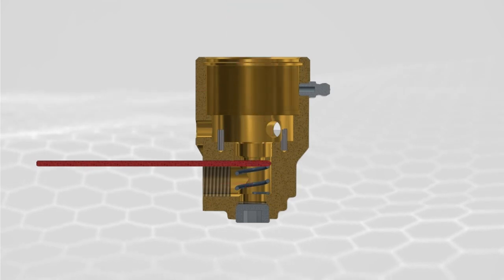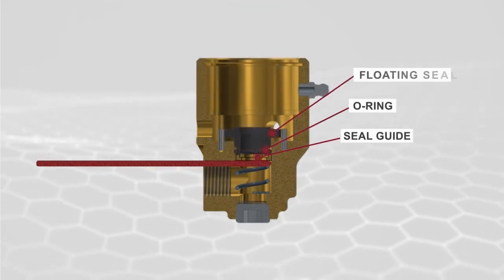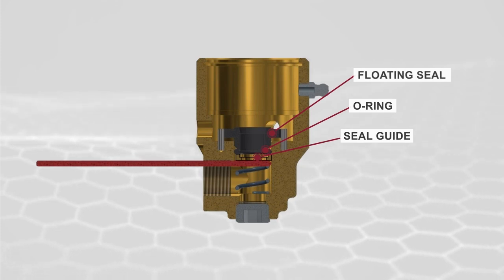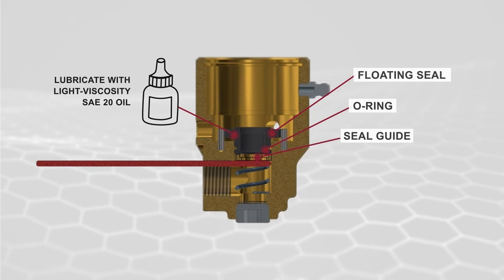Remove the spring compressor, insert the seal guide, then grease and insert the o-ring. Install new flooding seal after cleaning the seal face and lubricate it with light viscosity SAE 20 oil.